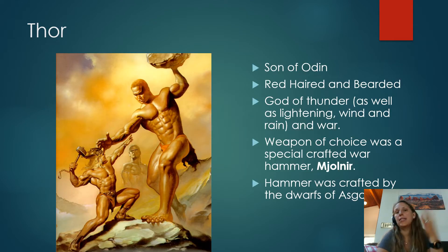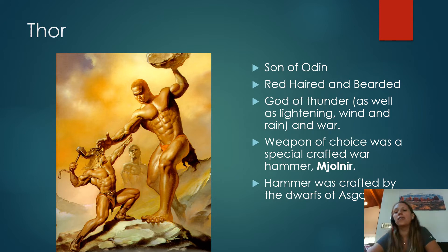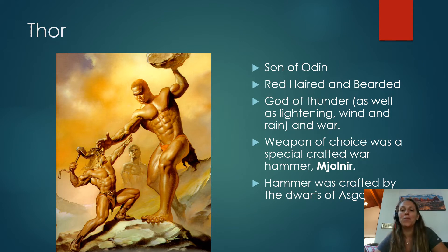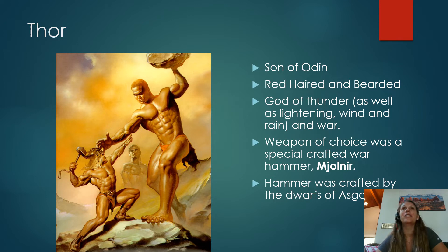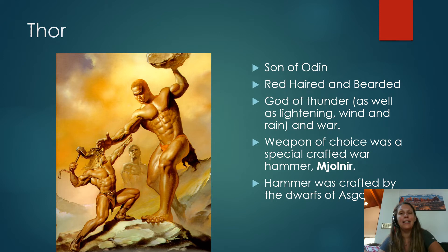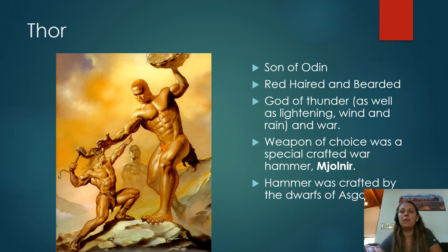Thor is Odin's son and probably the one we're most familiar with — he probably looked a lot like Chris Hemsworth, minus the fact that he's red-haired. He's the god of thunder, lightning, wind, rain, and war. He had a specially crafted hammer called Mjolnir, which you're familiar with from the movies, crafted by the dwarves of Asgard. He was very strong and powerful, but kind of more of a brute than how Thor is depicted in the movies. Generally, the Aesir gods are not pleasant — they're very warlike and vengeful, not the kind of people you really want to hang out with.